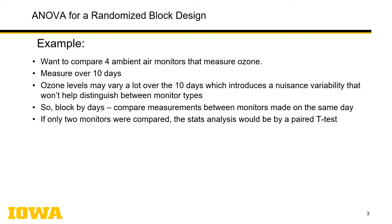In module 14, we talked about the randomized block design. Recall that this is a type of design when you know there may be extenuating influences on the factor you've chosen and the different levels of it. These nuisance factors can add to the total variability between the levels you're interested in. It would be nice to have a method for ignoring the variability of this factor that's arbitrarily influencing the variability of the levels you care about.